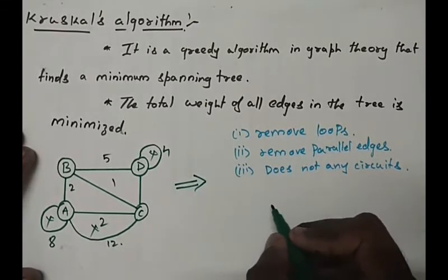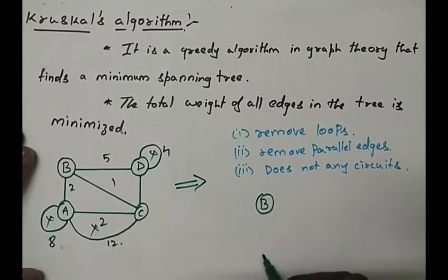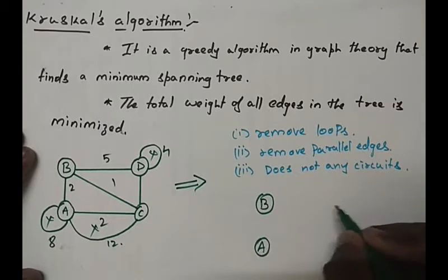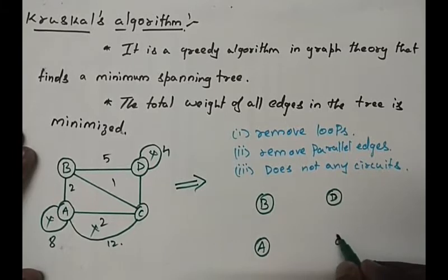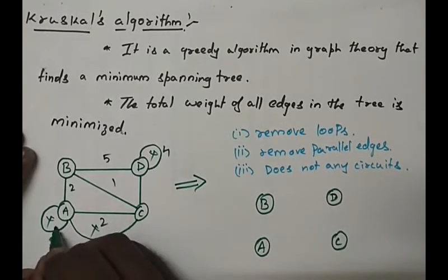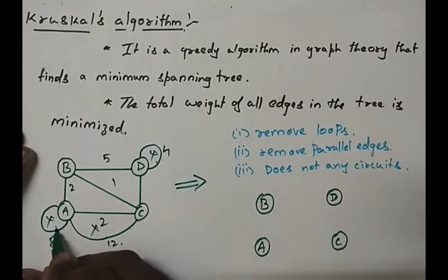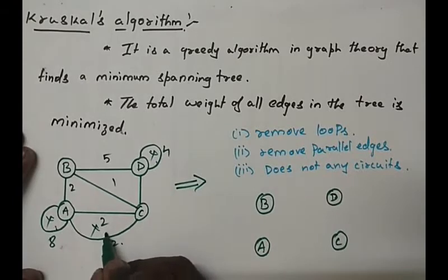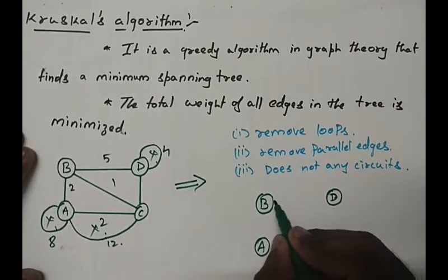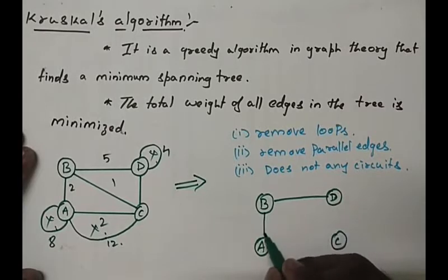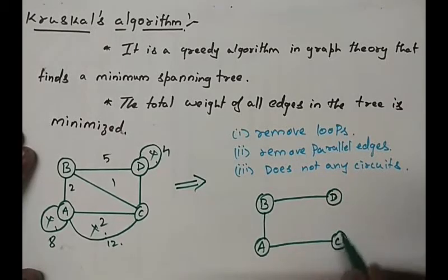To find the minimum spanning tree, first draw the skeleton of it: B, A, D and C. So we have deleted this one, this one and this one because there should be no loop and parallel edges. So if you connect it, it will become a spanning tree.